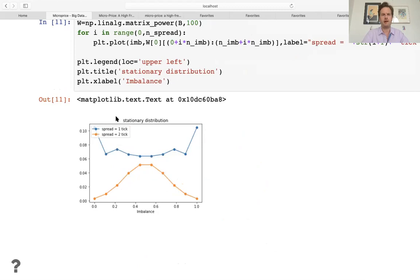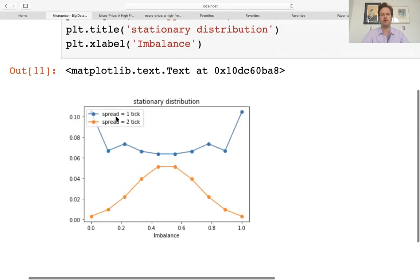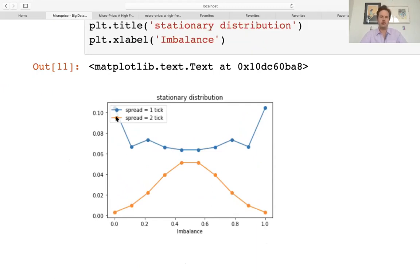What I'd like to take a look at next is the stationary distribution in our model for bank of America, which here again, the x-axis is imbalance and the y-axis is frequency. And we can see that the spread of one tick is observed much more often than the spread equal to two ticks. And also that the spread equal to one tick distribution is U shaped. In other words, the imbalance likes to be near the zero and one extremes. On the other hand, when the spread is two ticks, you tend to have bid and ask sizes of more roughly equal sizes. And the distribution is much more centered around 0.5.